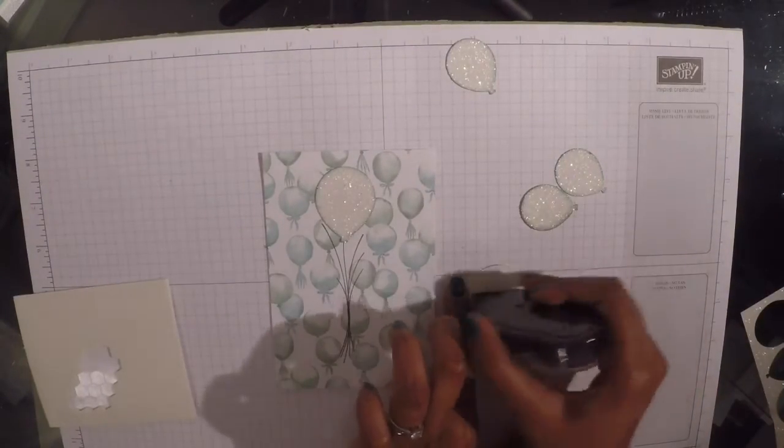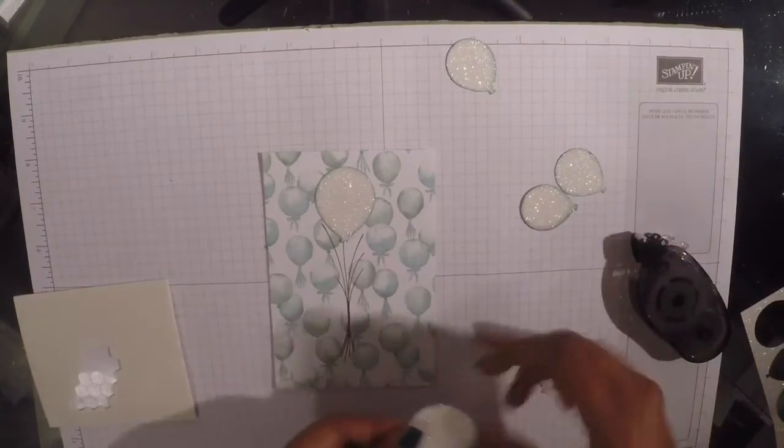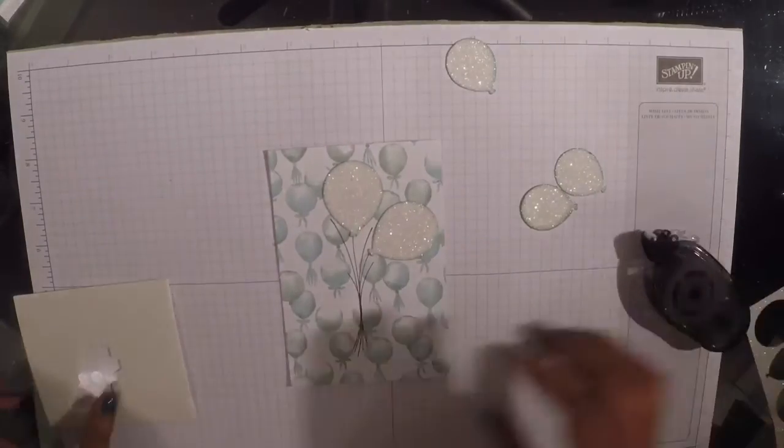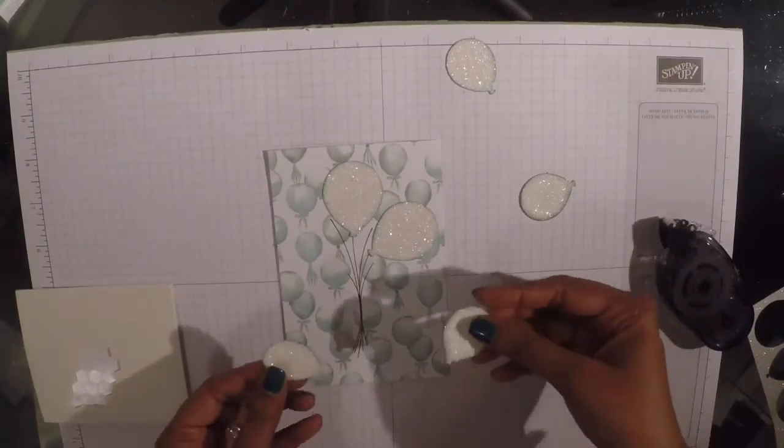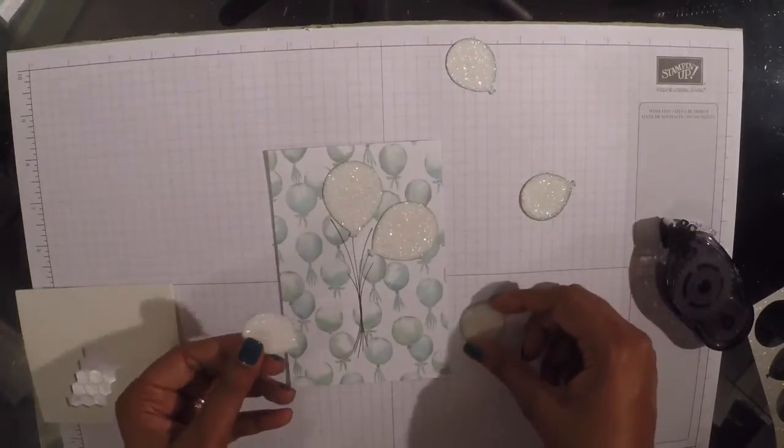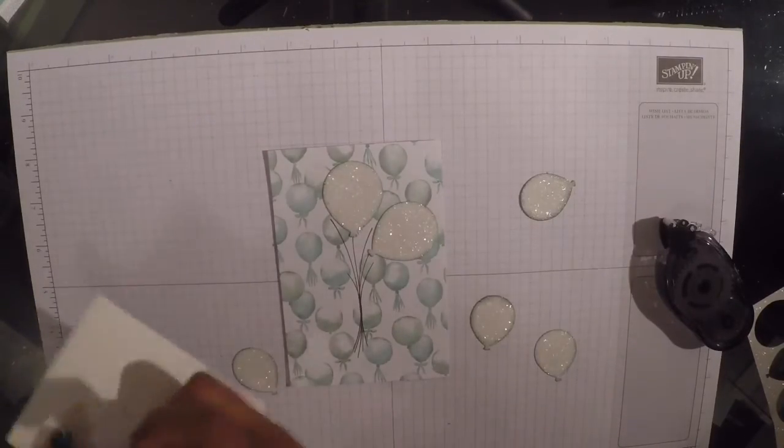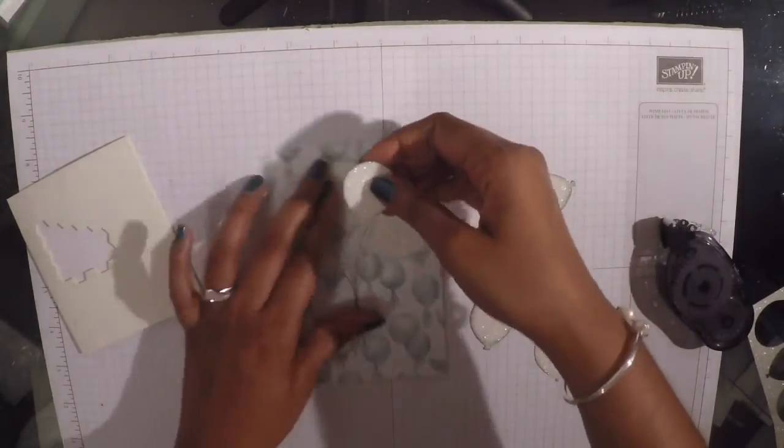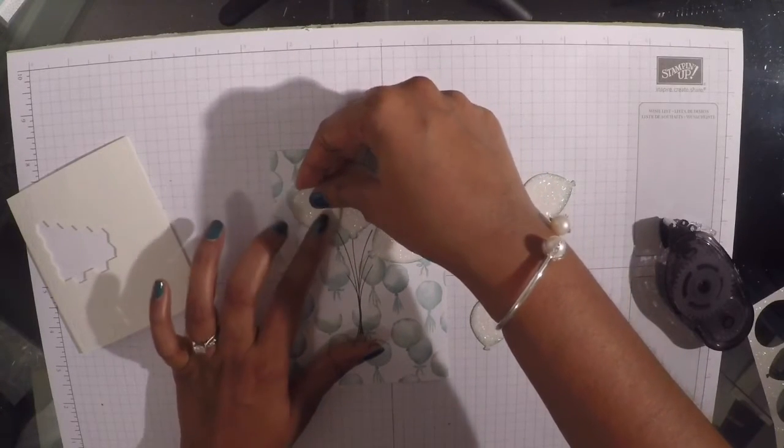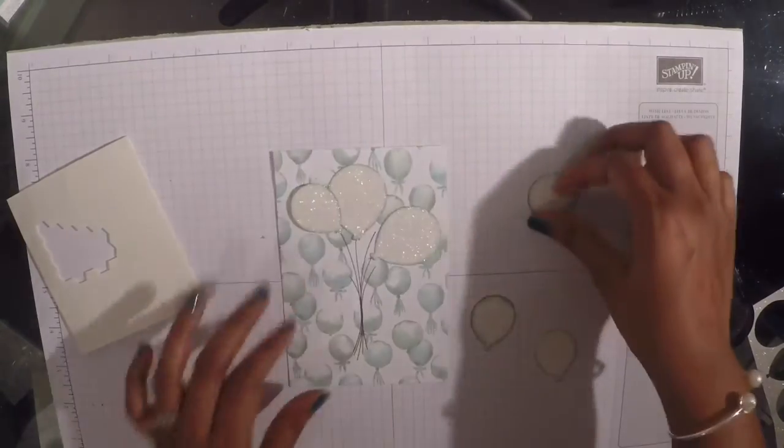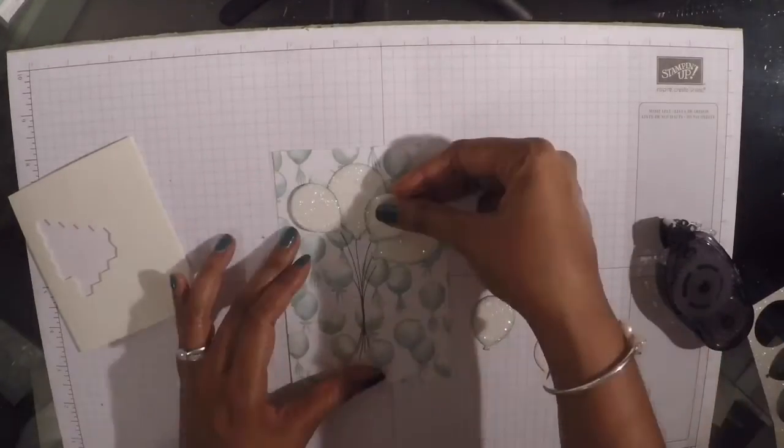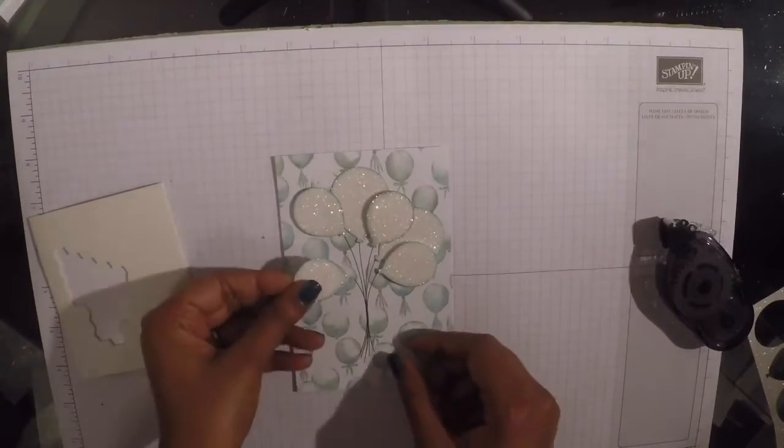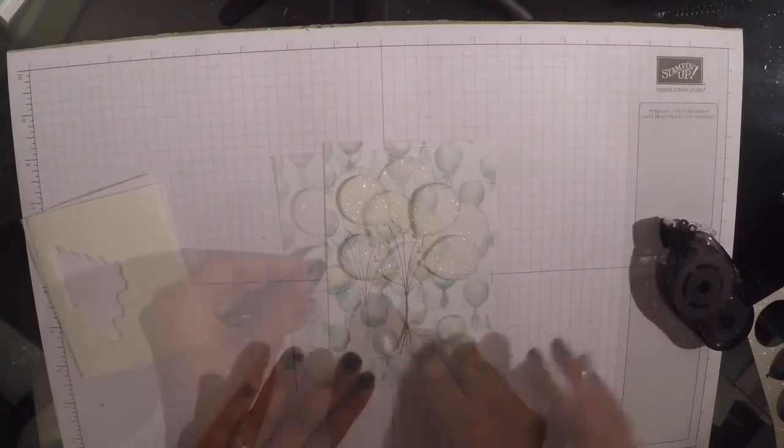And then I'm going to stick the other big one down flat again, with some snail as well. And I'm going to put that one there I think. And then I'm just going to pop all these small ones up on dimensionals so that the big ones look like they're going behind and the small ones look like they're in the front. So I'm just going to take a couple of dimensionals to the back of each balloon. And I'm going to put that one I think there. So that's all our balloons done. It's already looking pretty, actually.